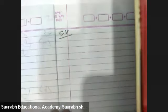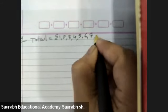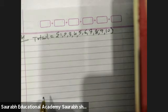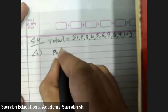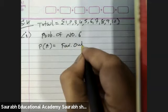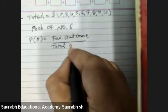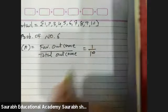Question number 4: Numbers 1 to 10 are written on 10 separate slips, mixed well, and one slip is taken from the box without looking. Total outcomes: 1, 2, 3, 4, 5, 6, 7, 8, 9, 10 — 10 slips. First: getting number 6. P of A equals favorable outcome upon total outcome — total we have 10 numbers and our favorable number is 6, so the answer is 1 upon 10.